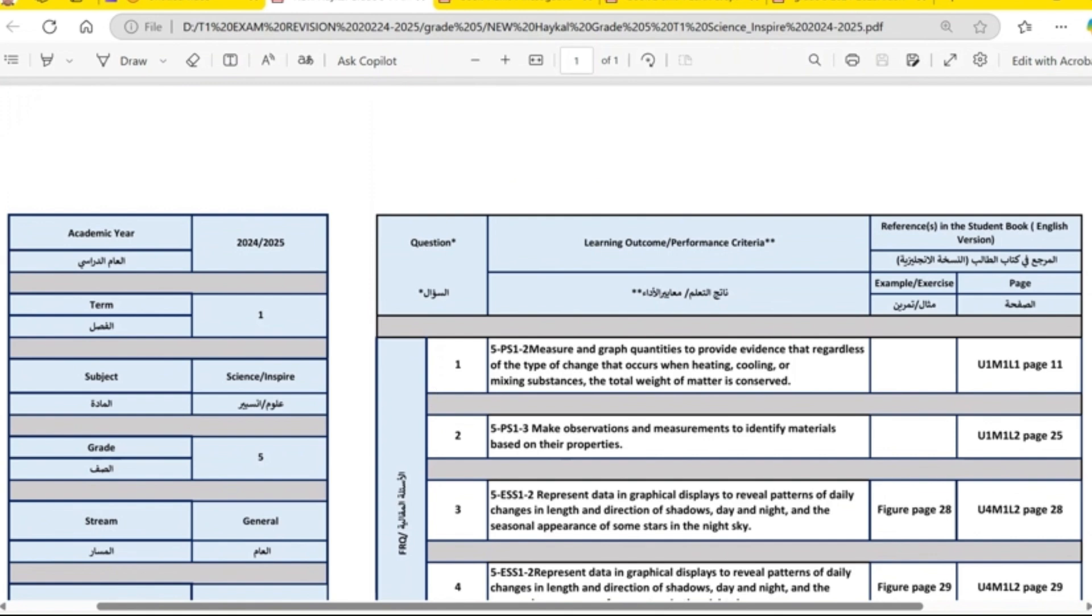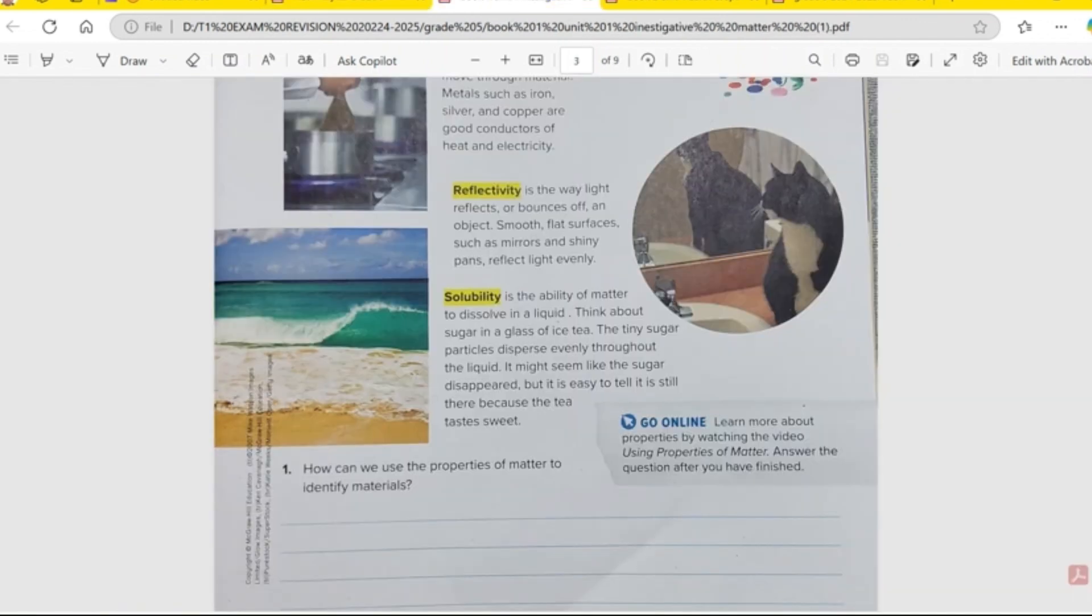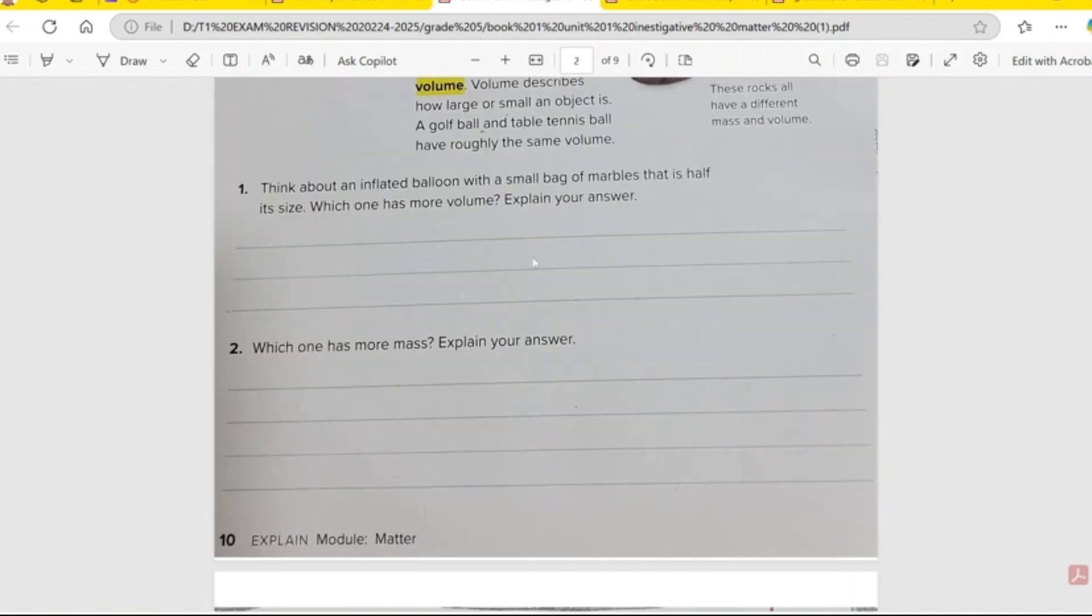The Heikal says number 1: Measure and graph quantities to provide evidence that regardless of the type of change that occurs when heating, cooling, or mixing substances, the total weight is conserved. This is about conservation of mass. The mass before equals the mass after. And it is in Book 1.